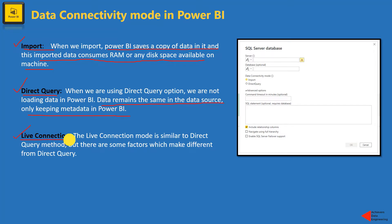The third option is live connection. When we opt for live connection, we do not import data — data resides within its original data source. For example, if it's a tabular model of SSAS, data will stay there. We only bring the reference metadata so that we can go ahead and create visualizations. Live connection and direct query might seem similar, but there are a couple of differences which make them different from each other. Let's take a look at what are the differences between these three query options in Power BI.